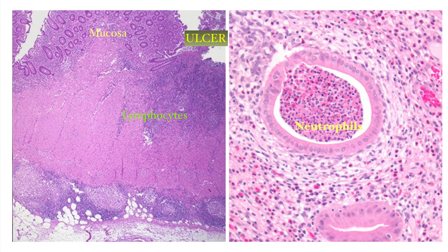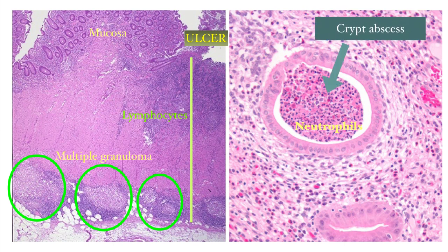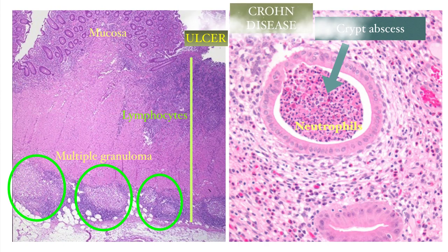The section on the left shows transmural inflammation of the bowel wall, characterized by ulcer formation and lymphocyte infiltration throughout the entire wall with multiple granuloma formation. At the same time, within the mucosa, there are acute inflammatory cells — neutrophils infiltrating within the mucosa and also accumulating within the crypts, which we call crypt abscesses. This is also a feature of Crohn's disease.